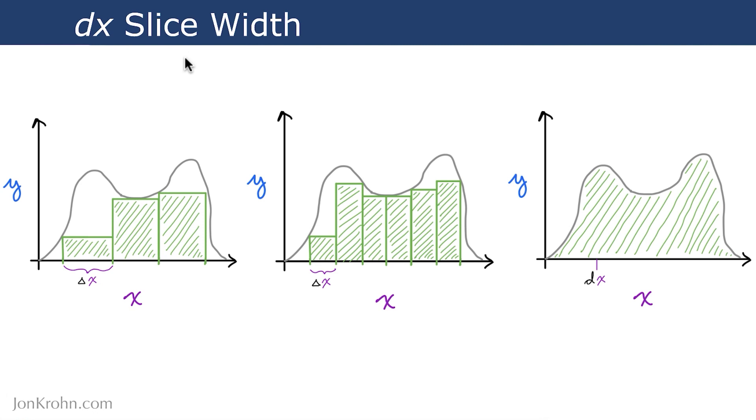If we make delta x half the size, then we can fit in six rectangles underneath our curve, and those rectangles together, when summed up, better approximate the area underneath the curve. There's less white space in total missing in this situation here relative to this one.